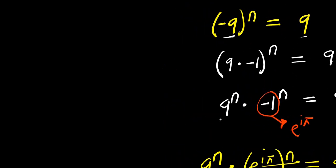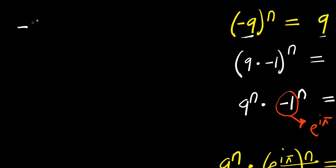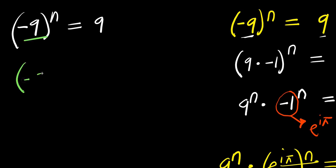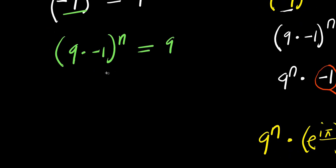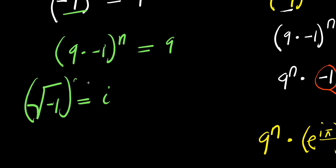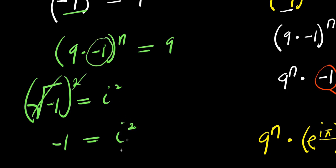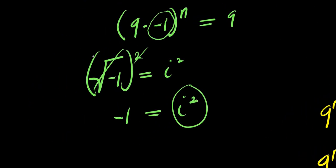Now let's consider the second way of solving this. We have negative 9 power n equals 9. We also replace this: negative 9 is 9 times negative 1. Recall that square root of negative 1 equals i, so negative 1 equals i squared. We are going to replace negative 1 with i squared, giving us 9 times i squared, which equals negative 1, power n equals 9.